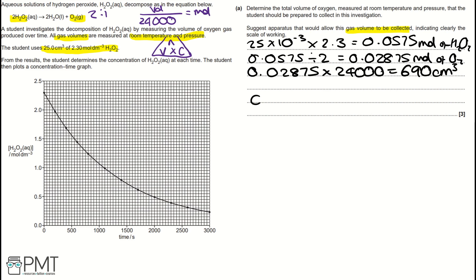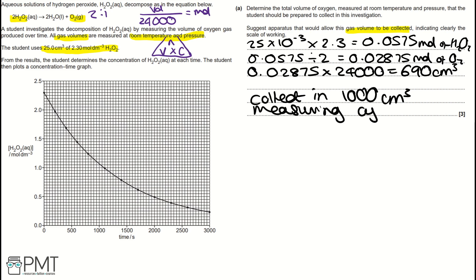Therefore, we need to collect gas in a 1,000 cm³ measuring cylinder — this is the piece of apparatus used in the experiment. To get the three marks for this question, you need to work out the moles of oxygen correctly, the volume of oxygen correctly, and state that you'll use a 1,000 cm³ measuring cylinder to collect the oxygen gas.